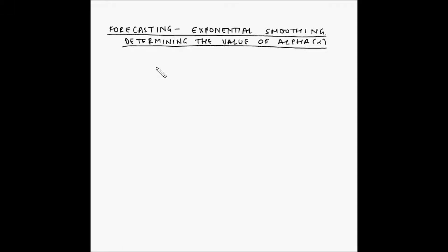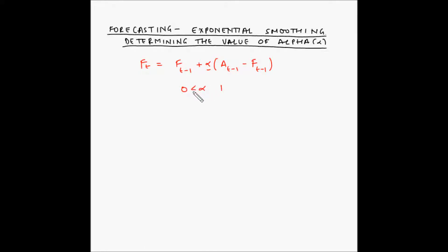As seen in the video for exponential smoothing, the formula for finding the forecast using the exponential smoothing method is: the forecast for period t is equal to the forecast for period t minus 1, plus alpha multiplied by actuals of t minus 1 minus the forecast of t minus 1. Here, the value of alpha is between 0 and 1. If you set the value of alpha to 0, your forecast for the next period equals the forecast of the previous period. Hence, setting the appropriate value of alpha is key to accurate forecasting.